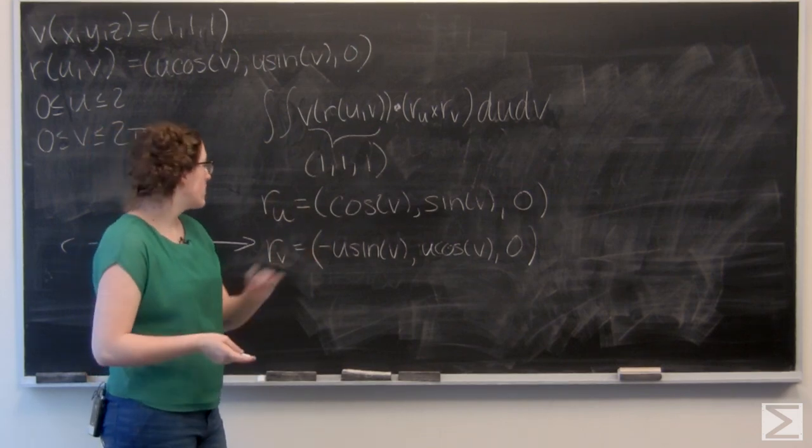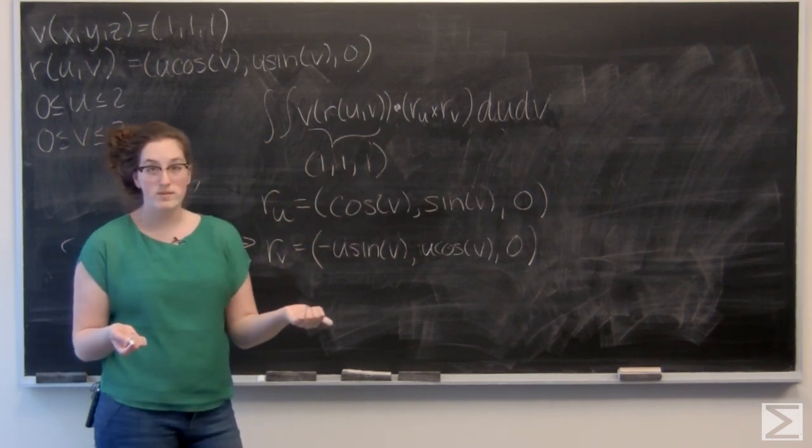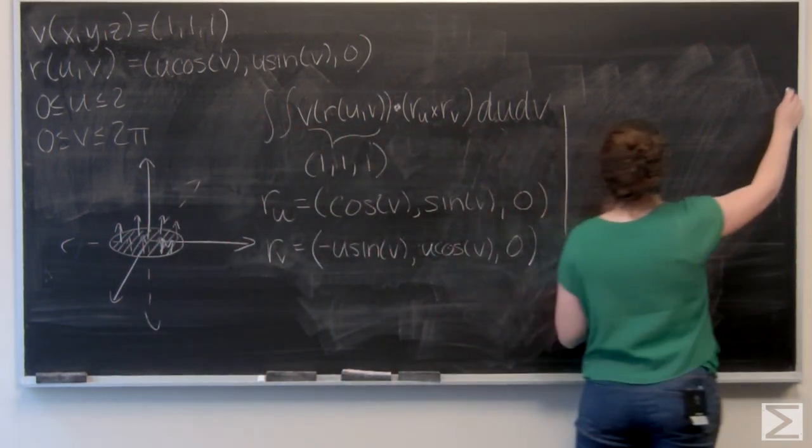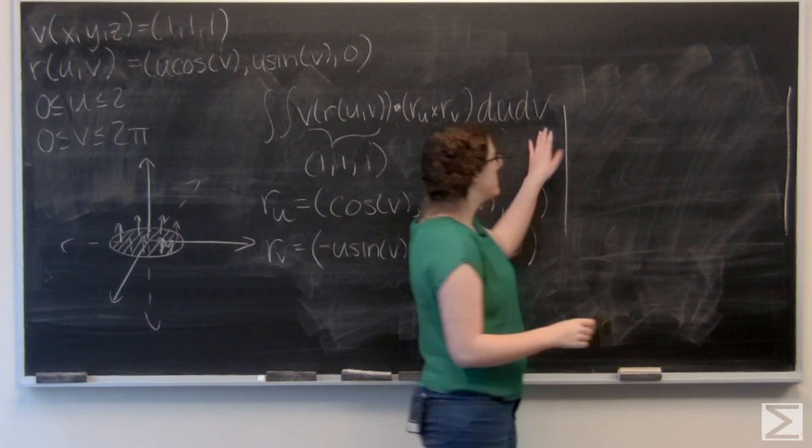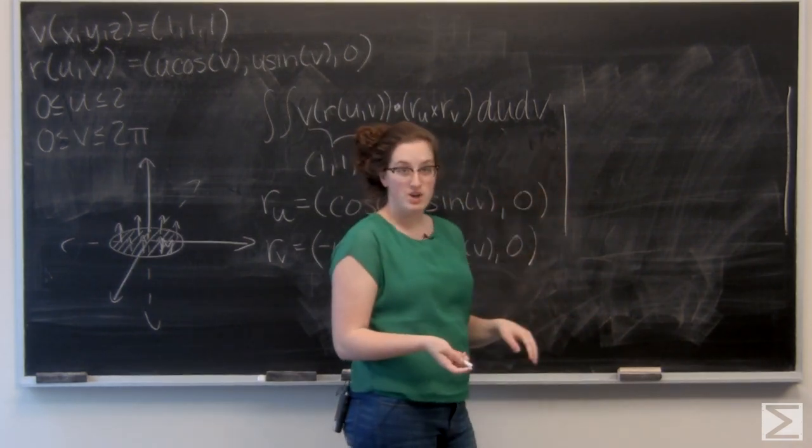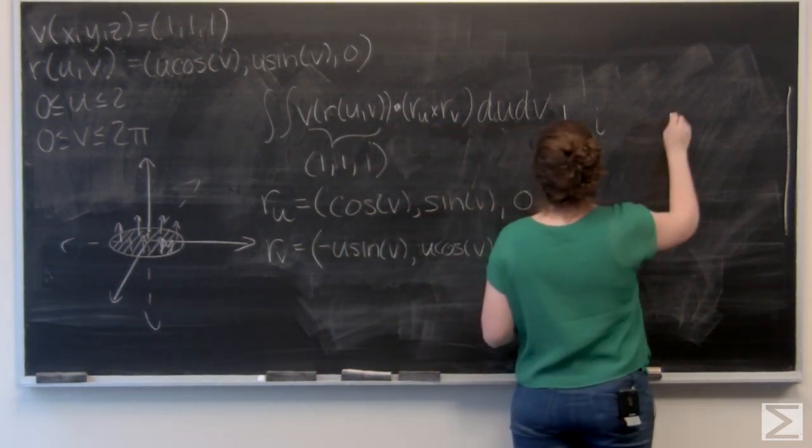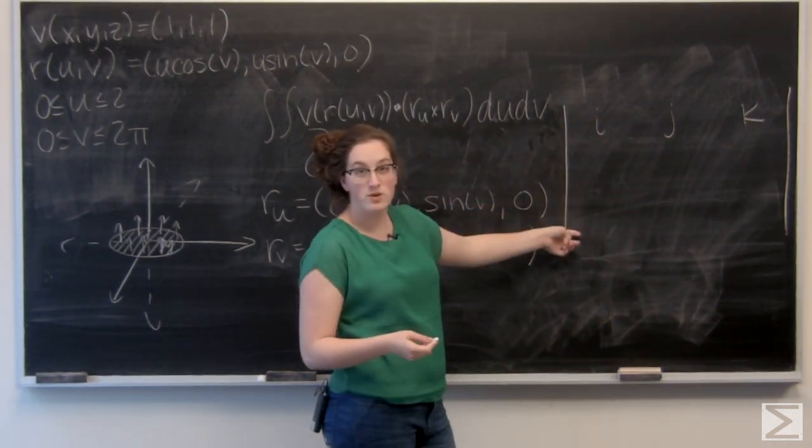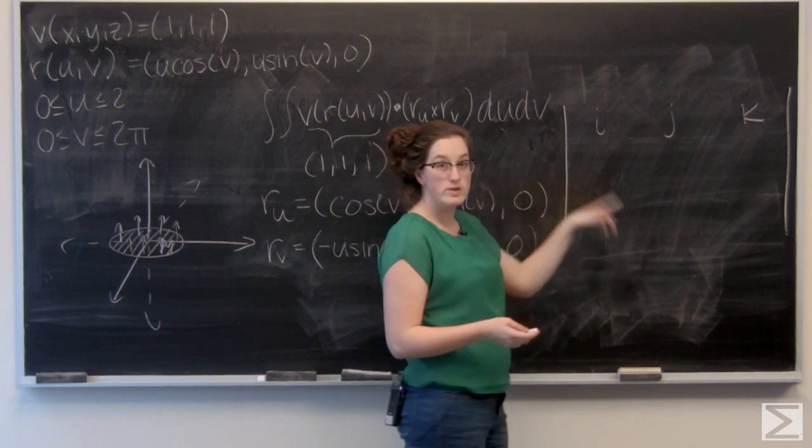So I'm going to use a 3 by 3 matrix and cofactor expansions. So the first row in this matrix is going to be the vector components i, j, and k. The second row is going to be r sub u, and the third is going to be r sub v. So I'm going to go ahead and copy those over.